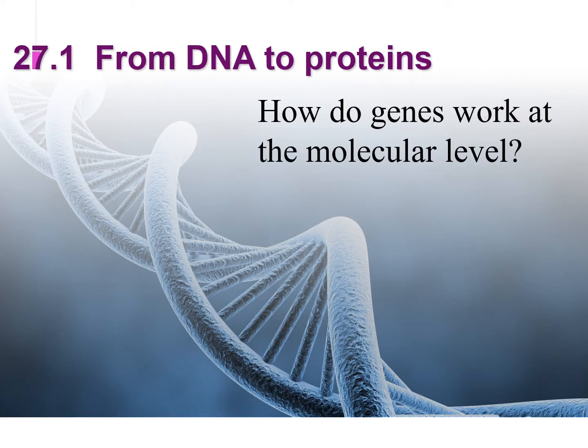In the last chapter, Chapter 26 of basic genetics, we know that the gene, or the allele, gives us the character — the phenotype. Now the question is: exactly how does the gene work at the molecular level, and eventually turns a segment of DNA, the allele, into a protein to give you the phenotype? Let's take a look.